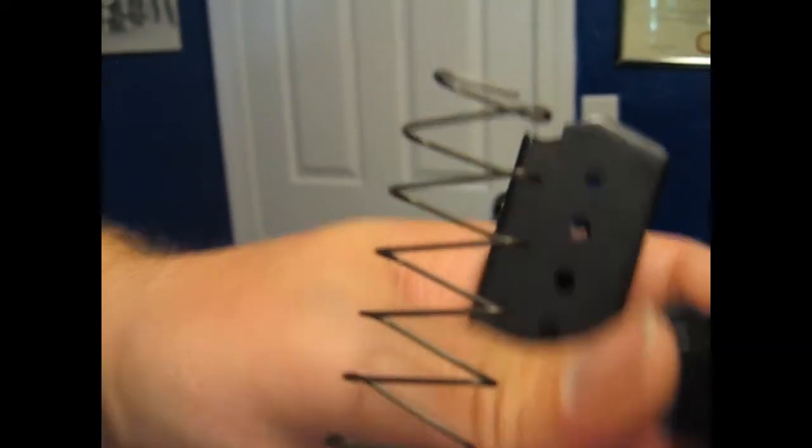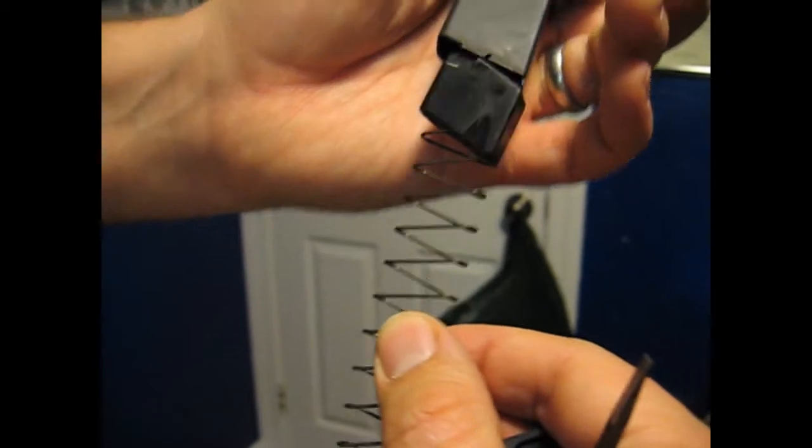So the top of the magazine spring should be facing forward inside the follower, and then just slide it back in together after you clean it up.